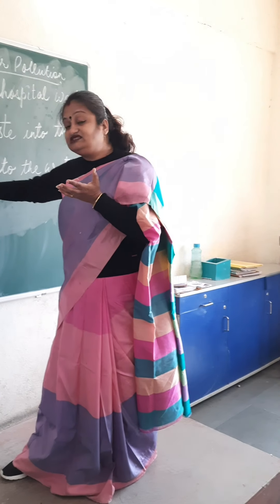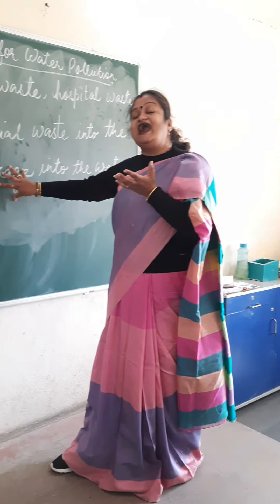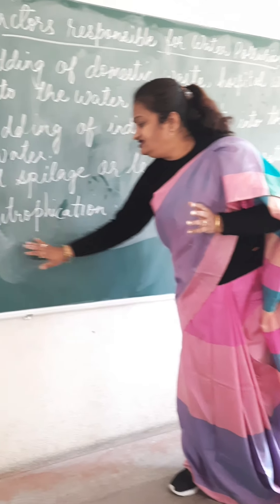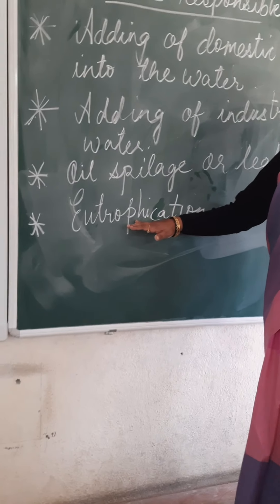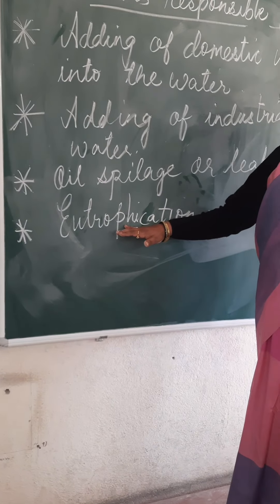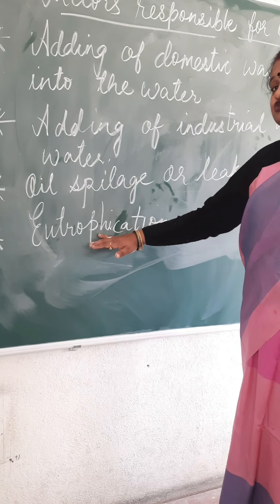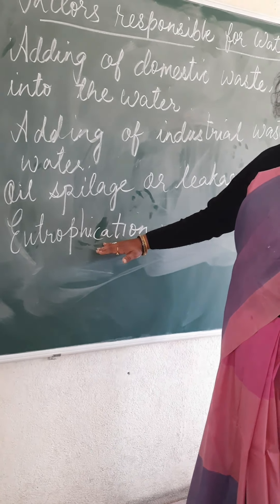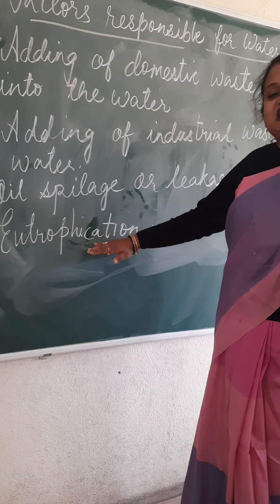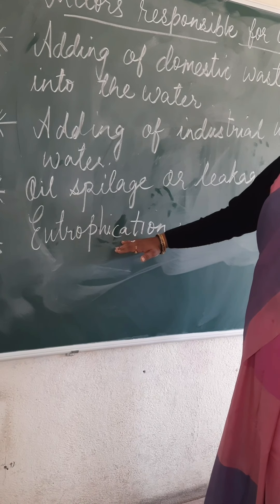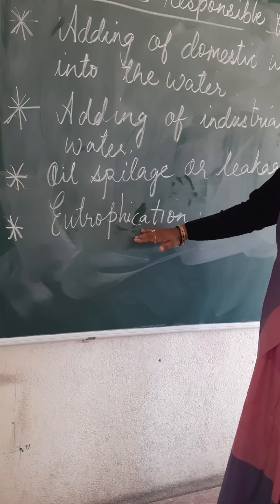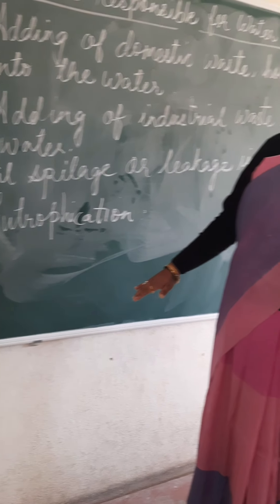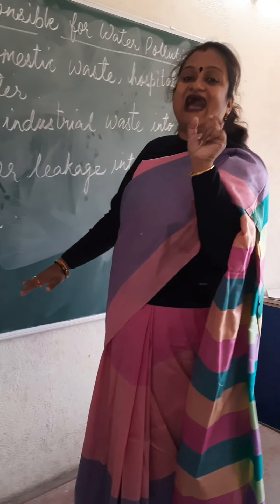The last topic — the word is not given but its definition and explanation has been given. Its pronunciation is eutrophication. The meaning of eutrophication is the excess amount of algae growth.